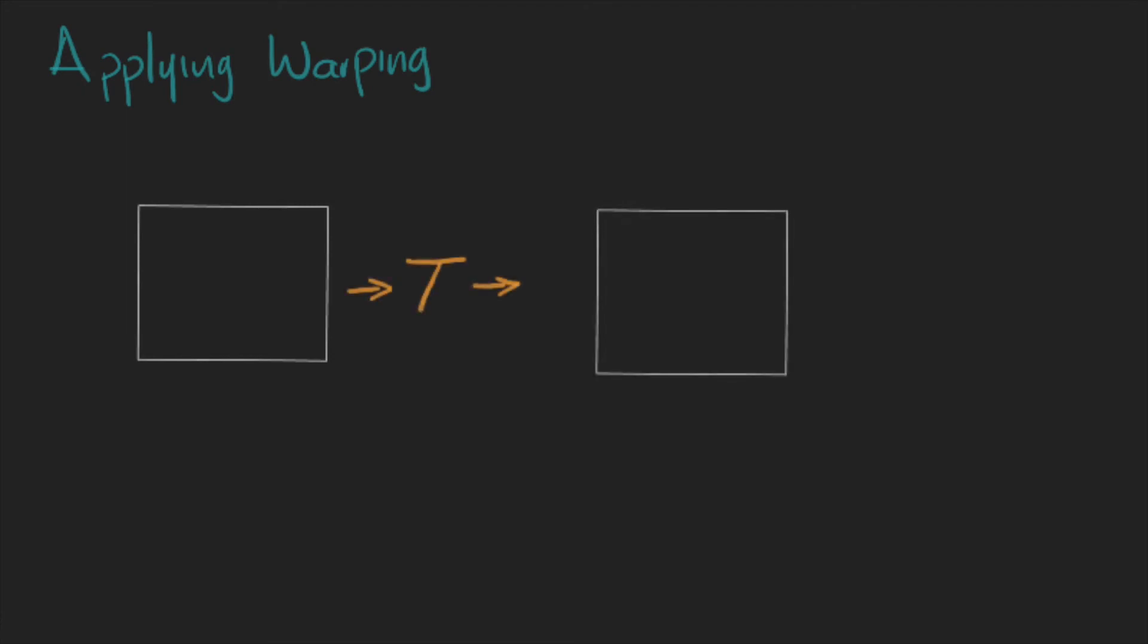Then, if we apply the warping matrix directly to each pixel, we will find the new locations of each one. But now, here there are three visible problems.